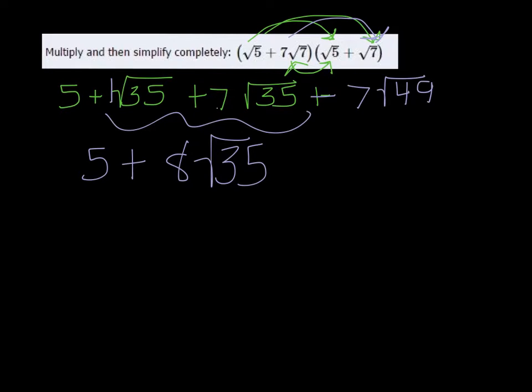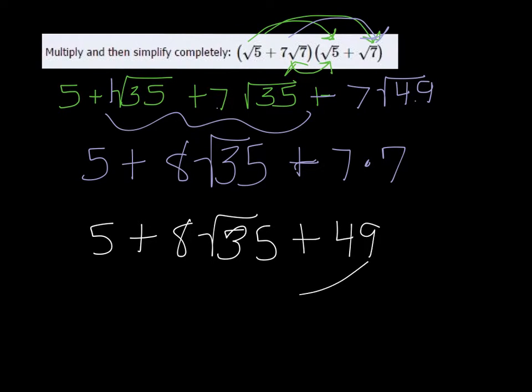35, and then square root of 49 is just 7, so we get 7 times 7. Well, that's going to be 5 plus 8 square root of 35 plus 49. But these two can go together, and we get